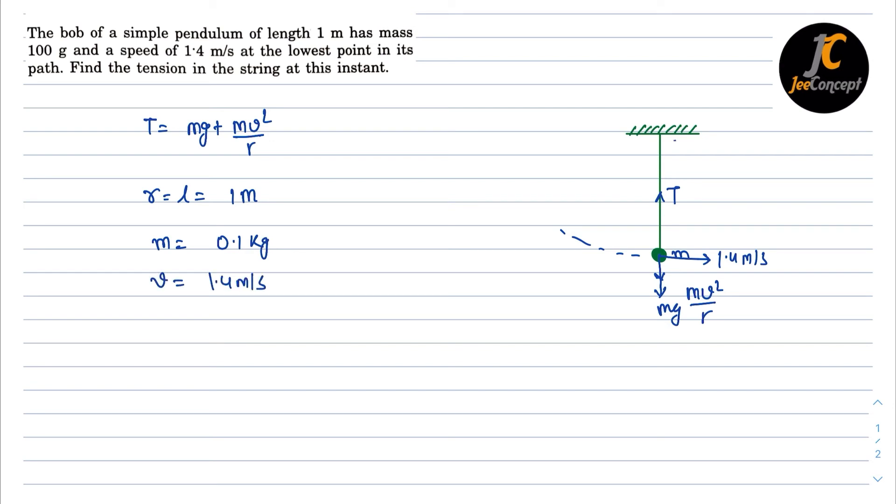So putting the value here we will get T is equal to 0.1 into 10 plus 0.1 into 1.4 whole square upon r is 1. So if we simplify that T is equal to 1 plus 0.196 or it is equal to 1.2 newton.